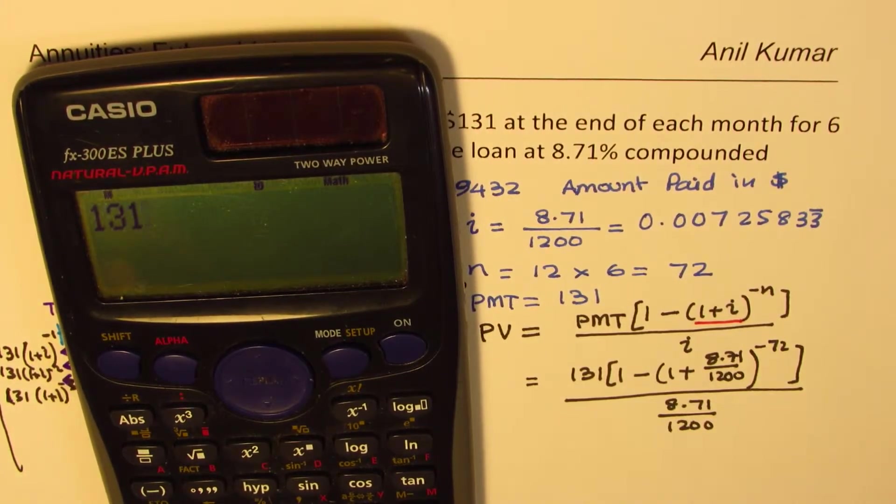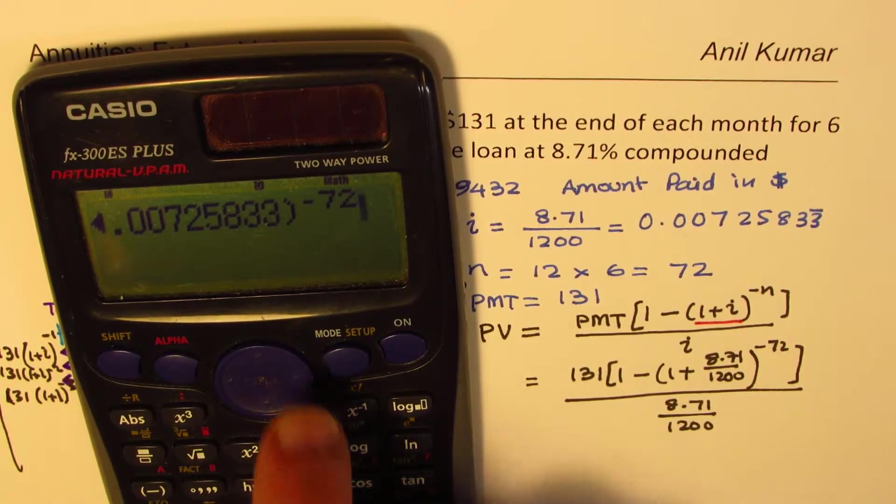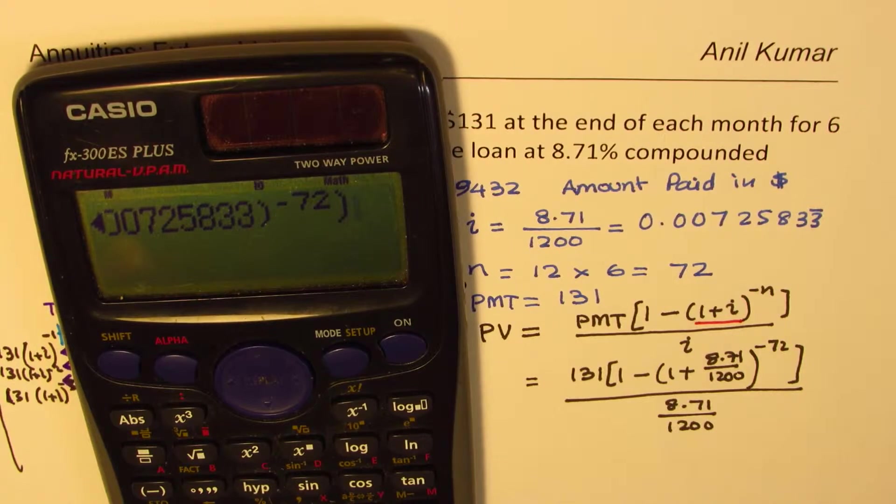So we have 131, bracket open, 1 minus, bracket open, 1 plus. Now we'll use the decimal value, 0.00725833, okay? And that is to the power of negative 72. So negative, use this negative, 72. And now we need to close the bracket. So that is the bracket close.